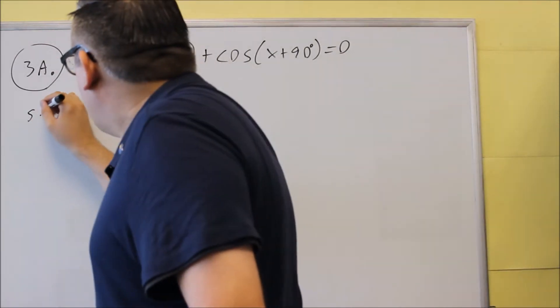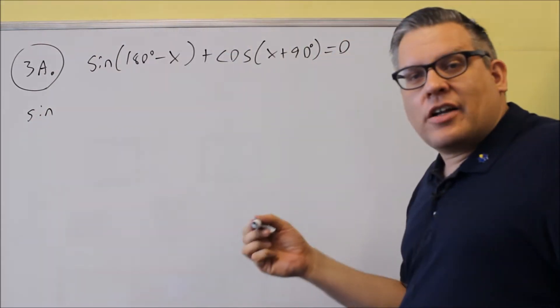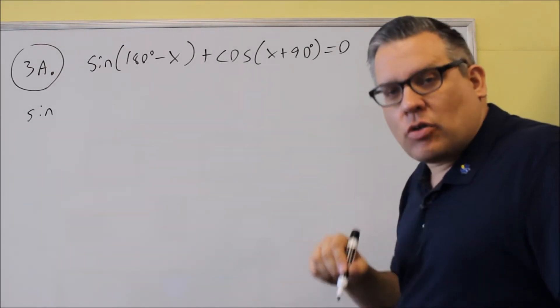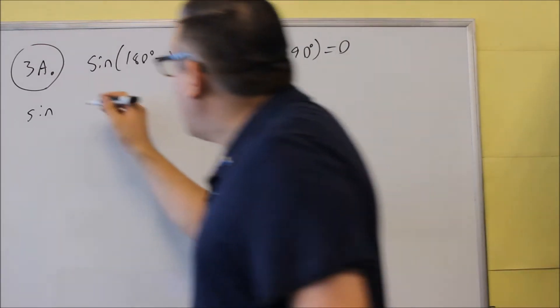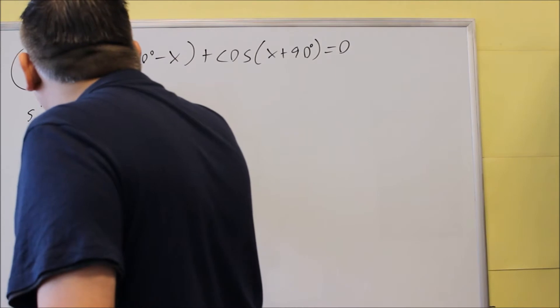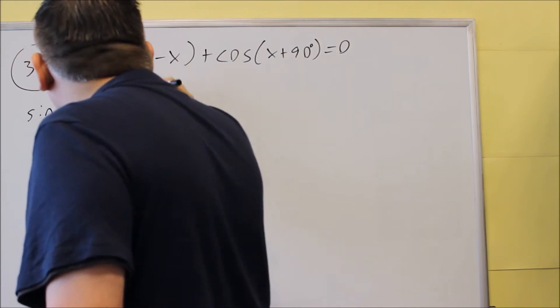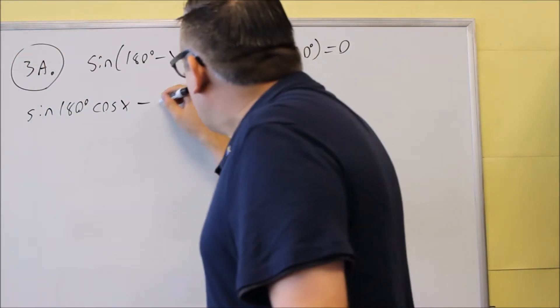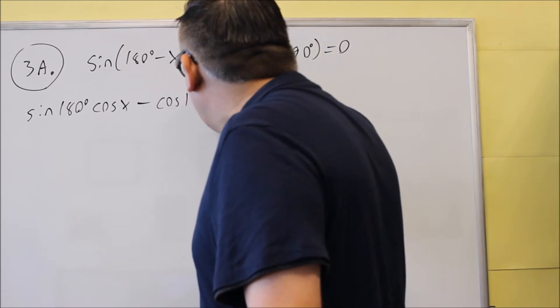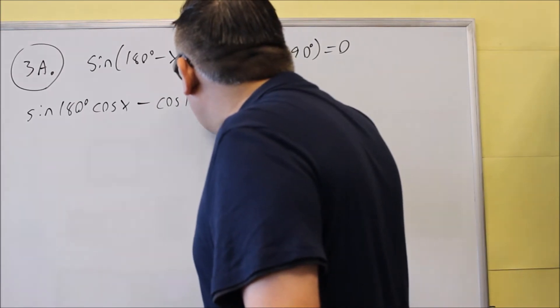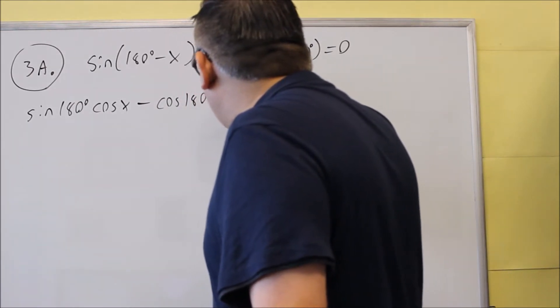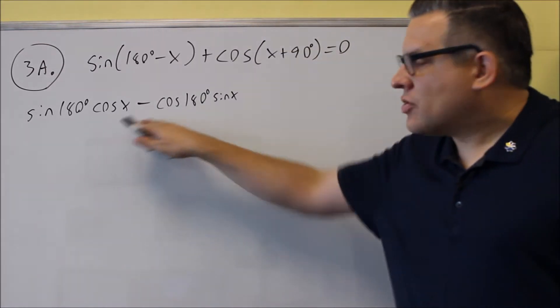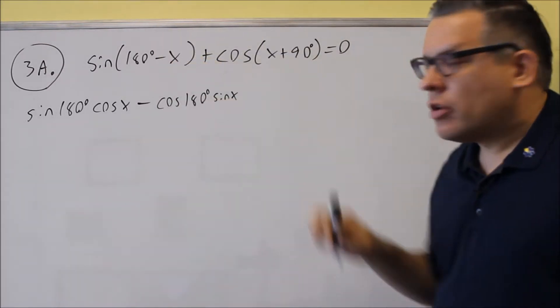So let's put that in. So for this one, that's sine cosine minus cosine sine. So we're going to do sine 180 cosine x minus cosine 180 and then sine x. So that is the difference formula for the first one.